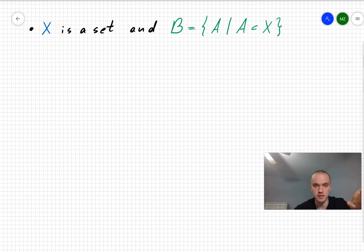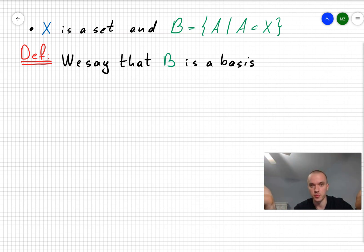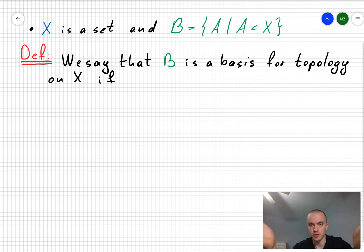We need to take some set X and some collection of subsets, which we're going to call B. And then we're going to say that B is a basis for topology on X if two conditions are going to follow.